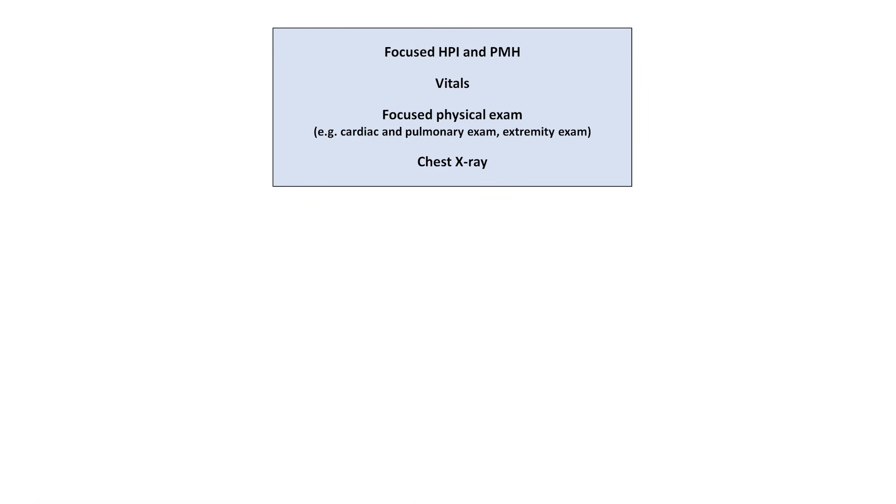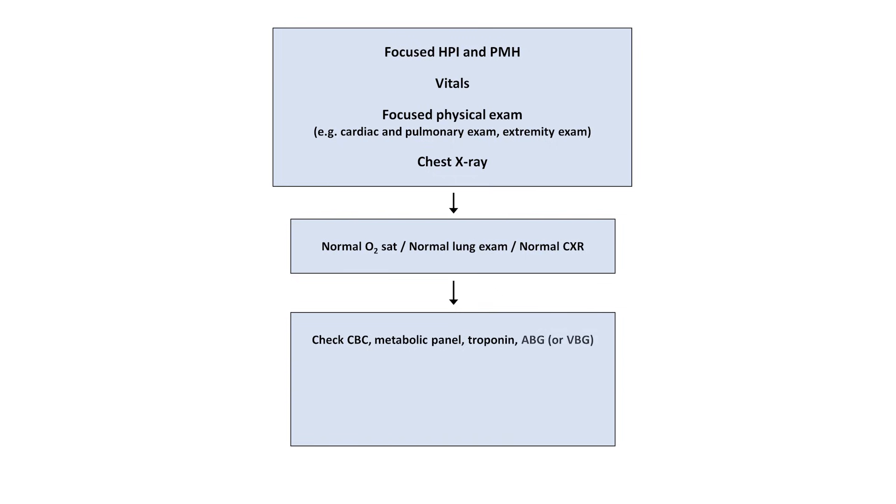The dyspneic patient who has a totally normal exam including normal O2 sat and a normal chest x-ray can present a diagnostic challenge and will require casting a wider net, so to speak. If you have not already done so, this is when to consider looking at the CBC, metabolic panel, troponin, ABG or VBG, either a D-dimer or CT angiogram of the thorax, the ECG, and consider checking pulsus paradoxus, particularly if the patient has a history of cancer or other reason to have a pericardial effusion.